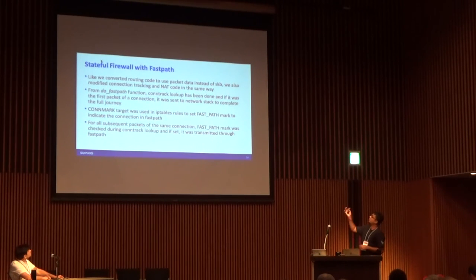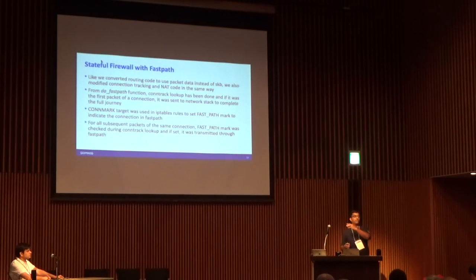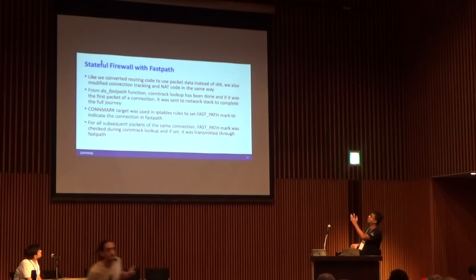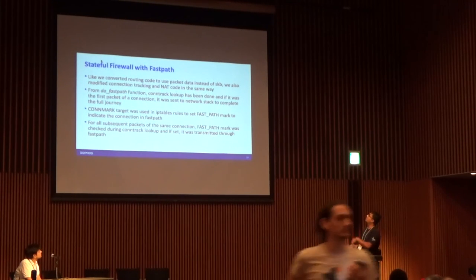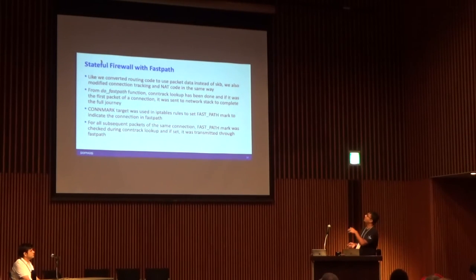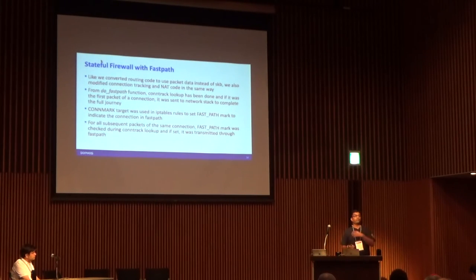If it is the first packet of a connection, it continues into the kernel stack where you have all your firewall rules in nftables, iptables, or using ipsets. Then, using the connmark target, you set a fast-path mark on the connection to indicate that all subsequent packets will be processed by the fast path.